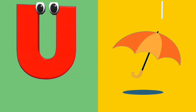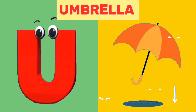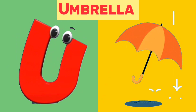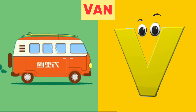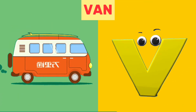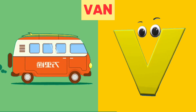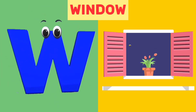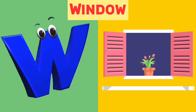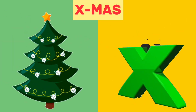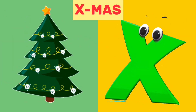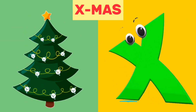U is for Umbrella. U, U. Umbrella. V is for Van. V, V. Van. W is for Window. W, W. Window. X is for Xmas. X, X. Xmas.